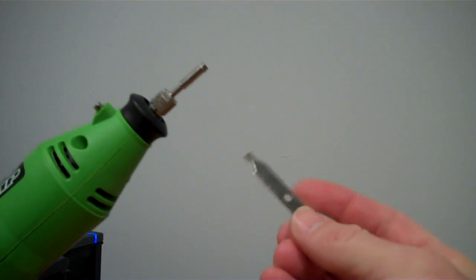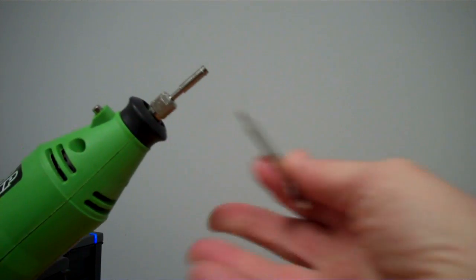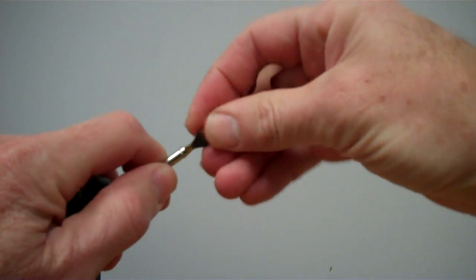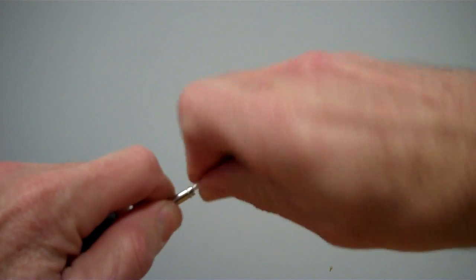We're going to take our tool, either a small screwdriver or you can use the tool that comes with the kit, and loosen that screw that's at the end of that mandrel.